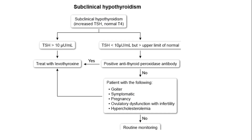Subclinical hypothyroidism involves increased TSH with normal T4 levels. Treatment with levothyroxine is considered if TSH is above 10 mIU/mL, or if positive antithyroid peroxidase antibodies are present, especially in symptomatic patients or those with specific conditions like pregnancy, ovulatory dysfunction, or hypercholesterolemia.